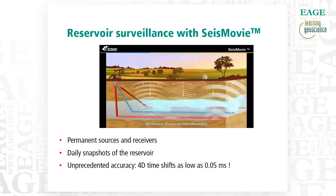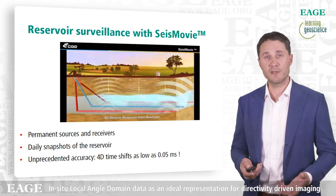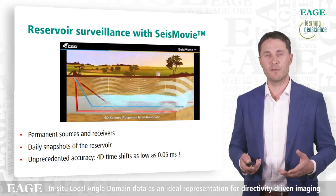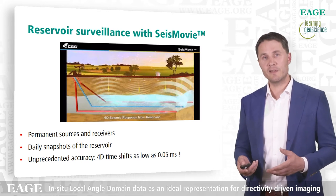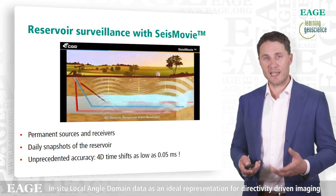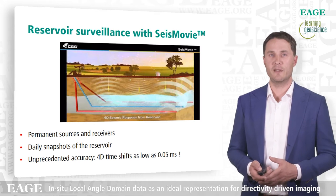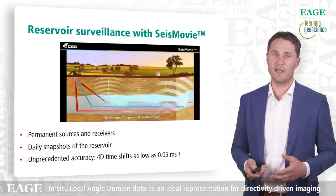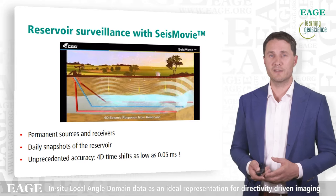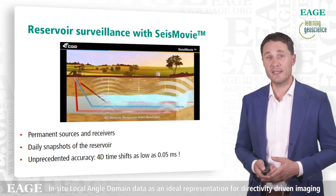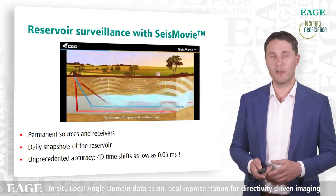We did a trial with a system called Seismovie, developed by CDG. This system consists of permanently installed sources and receivers. The sources emit a signal that's reflected at the reservoir level and detected by the receivers. One major problem in time-lapse experiments is the repeatability of sources and receivers. In this case we sidestep that problem completely because the sources and receivers are cemented in place — they do not change. So we don't have positioning or coupling repeatability issues. This gives us unprecedented accuracy and we can get 4D timeshifts as low as 50 microseconds. Because the system continuously records and emits source energy, we get daily snapshots of the reservoir.